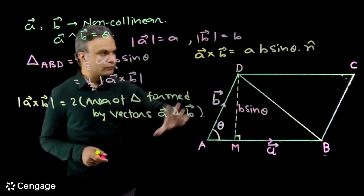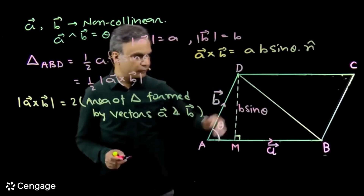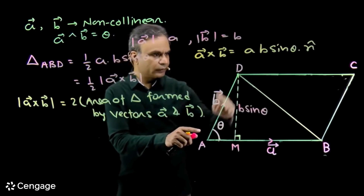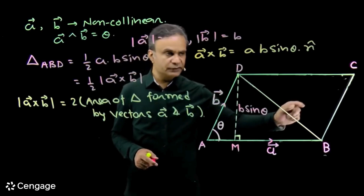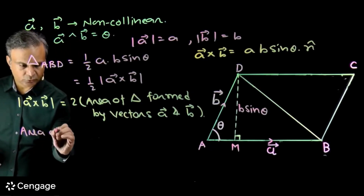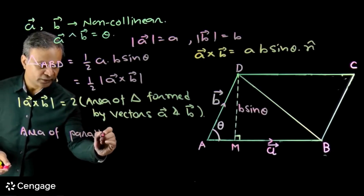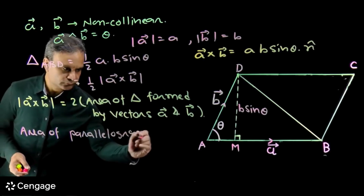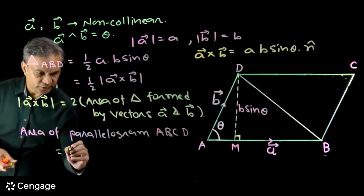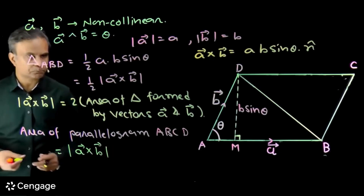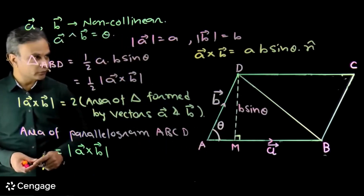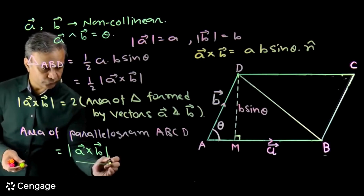What will be the area of this parallelogram? We know that the diagonal divides a parallelogram into two parts of equal area. So area of triangle ABD equals area of triangle BDC. Therefore, area of parallelogram ABCD will be modulus of A cross B. And half of modulus of A cross B is the area of the triangle formed by vectors A and B. So area of parallelogram formed by vectors A and B equals modulus of A cross B.